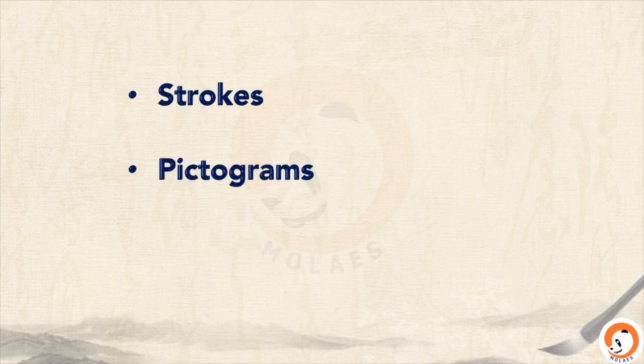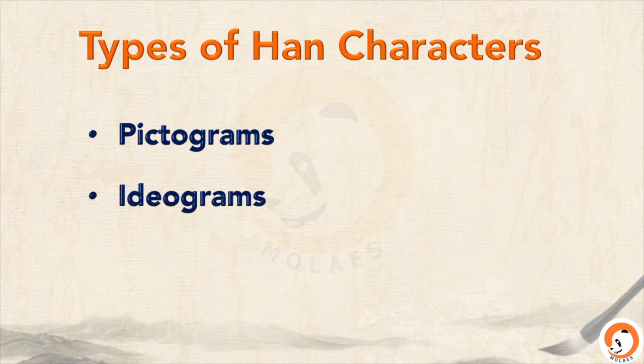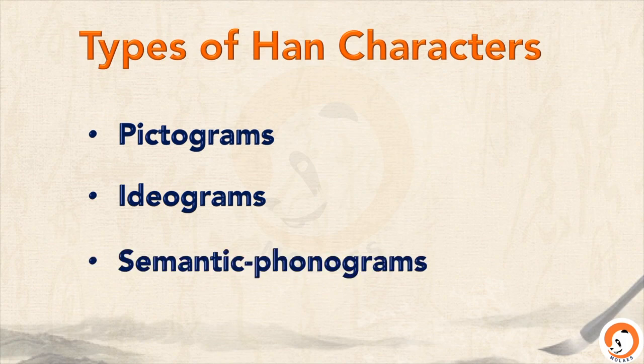So far, we have introduced some concepts of Chinese characters: strokes, pictograms, and radicals. Pictograms is one of the three main types of Han characters. Today, we are going to introduce the other type of Han characters — ideograms — and next time, we are going to introduce semantic phonograms.